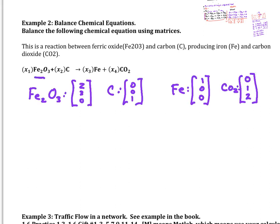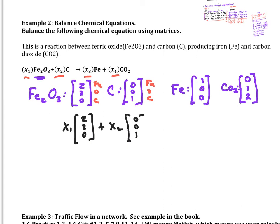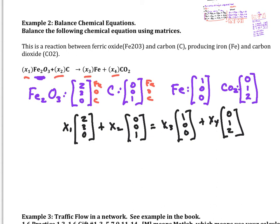I can write each molecule as a vector with components for iron, oxygen, and carbon. Ferric oxide has 2 iron and 3 oxygen atoms, carbon is just carbon, and so on. I set up x1 times the first vector plus x2 times the second equal to x3 times the iron vector plus x4 times the CO₂ vector (0, 1, 2). Solving for x1, x2, x3, x4 gives the balancing coefficients. We make it homogeneous — bring everything to one side — and set it up into an augmented matrix.